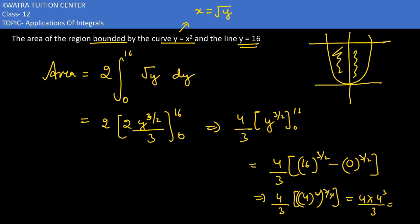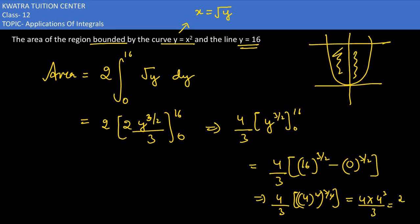4 to the power 3 is 64. 64 multiplied by 4 is 256. So 256 over 3 would be the final answer.